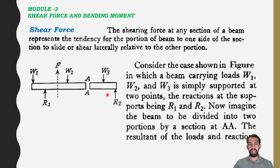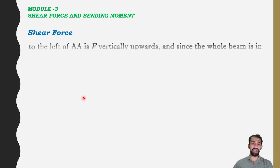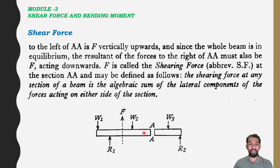The supports are at R1 and R2, the reactions being R1 and R2. Now imagine the beam to be divided into two portions by a section AA — a left side and a right side at section AA.